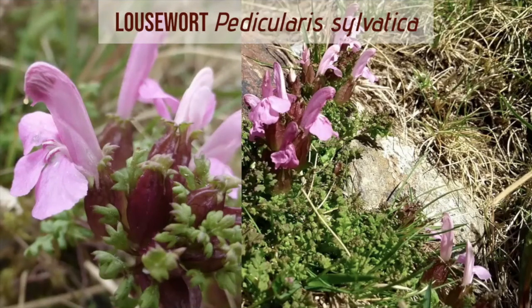The flower has an upper lip and a lower lip; the lower lip is split into three distinct lobes, and the upper lip is curved over a bit like a hood. The leaves can appear from mid to muddy green right through to purple.